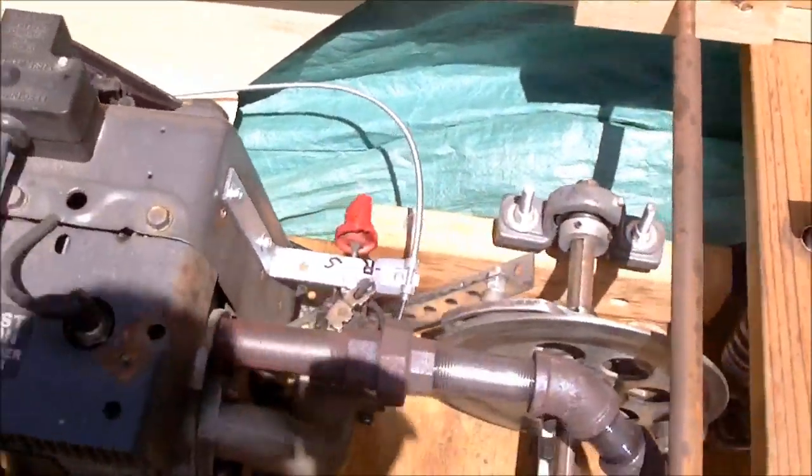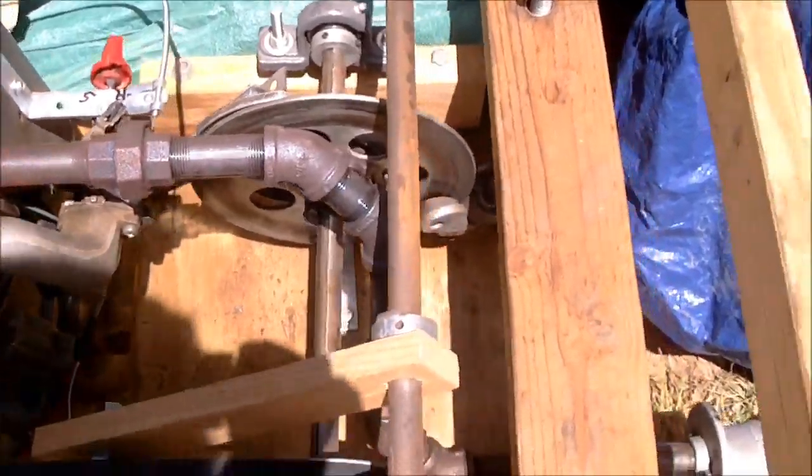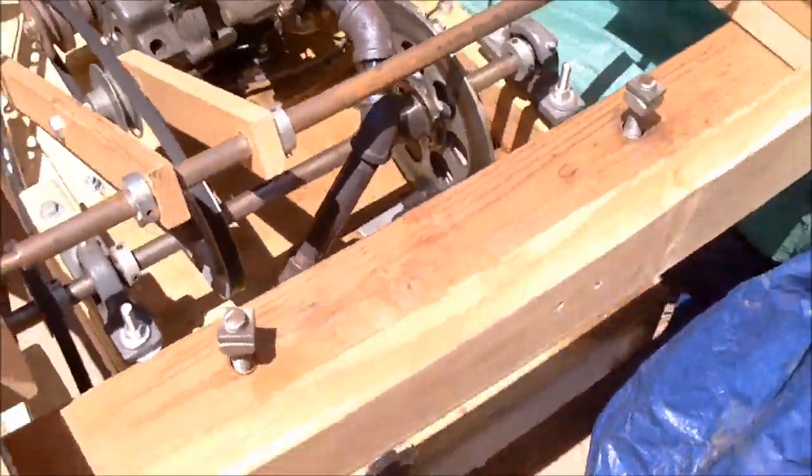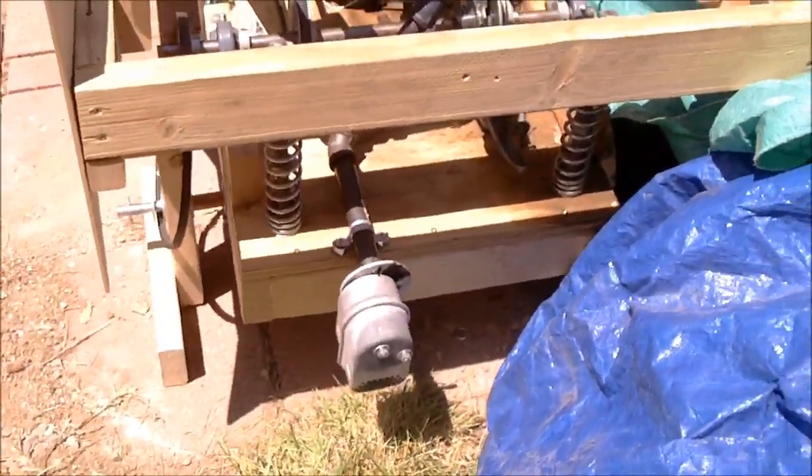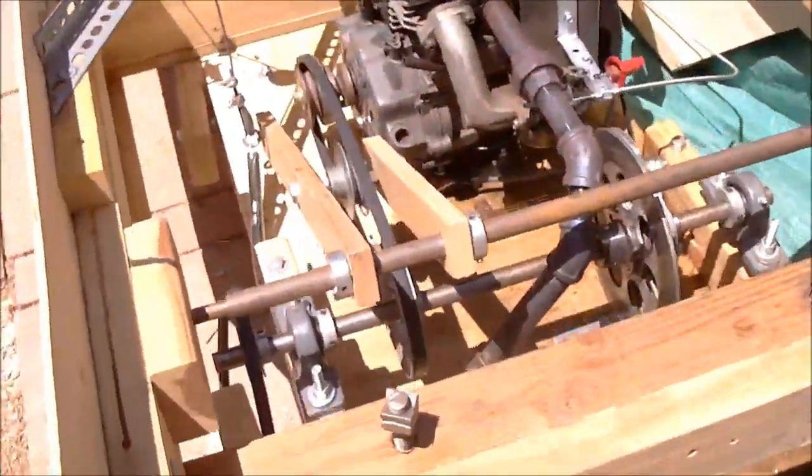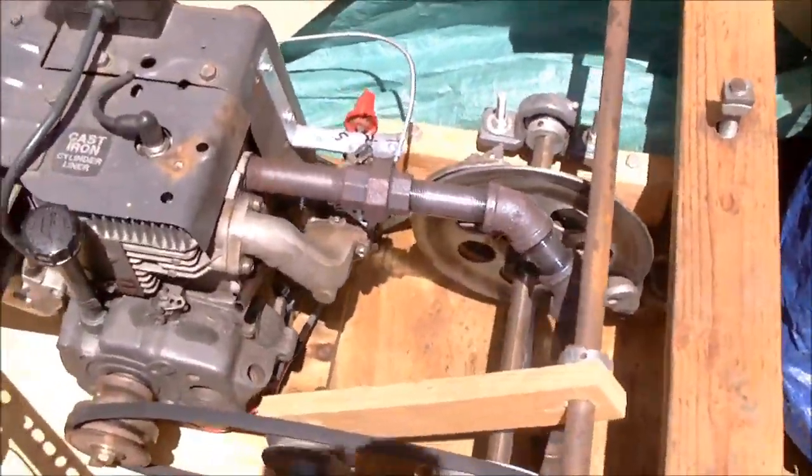And then we have the choke and the exhaust. We used gas piping, which is cast iron. You can just get it from Home Depot or whatever, a normal hardware store.